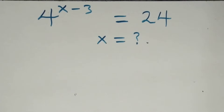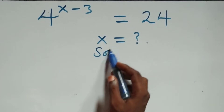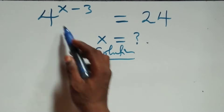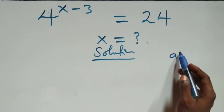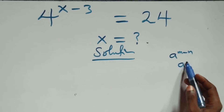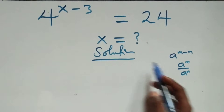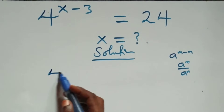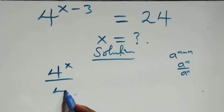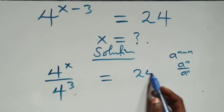How to solve this nice exponential equation. What we have here follows the rule: a raised to power m minus n is the same as a raised to power m over a raised to power n. So it becomes four raised to power x over four raised to power three equals twenty-four.